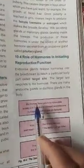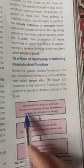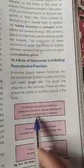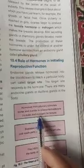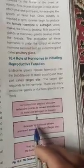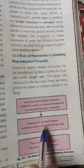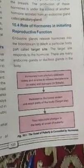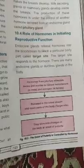Hormones from the pituitary gland stimulate and activate the testes and ovaries to release testosterone in males and estrogen in females. These are released into the bloodstream and reach parts of the body — the target sites — stimulating changes in secondary sexual characters at the onset of puberty.